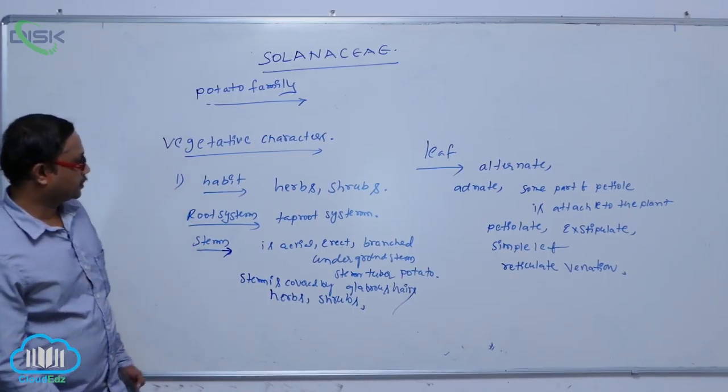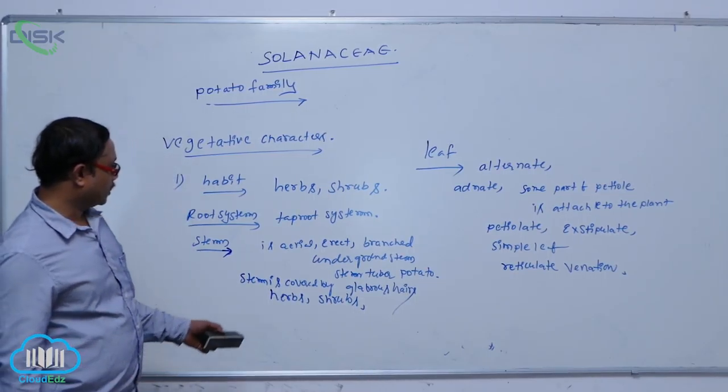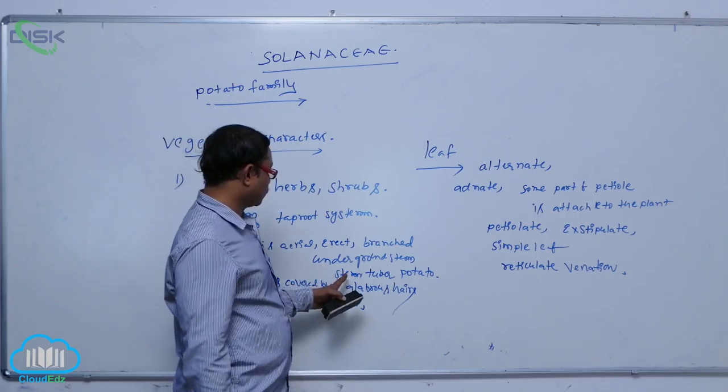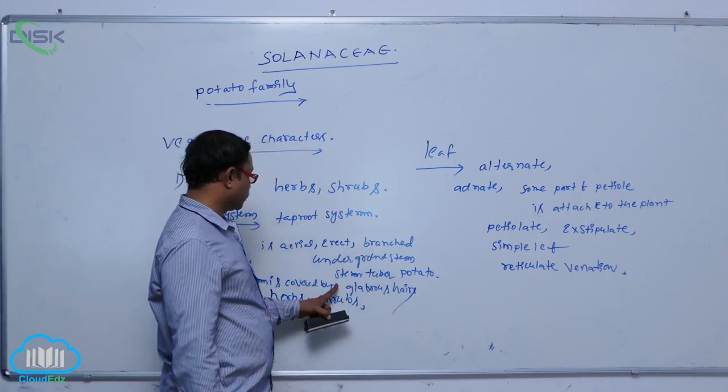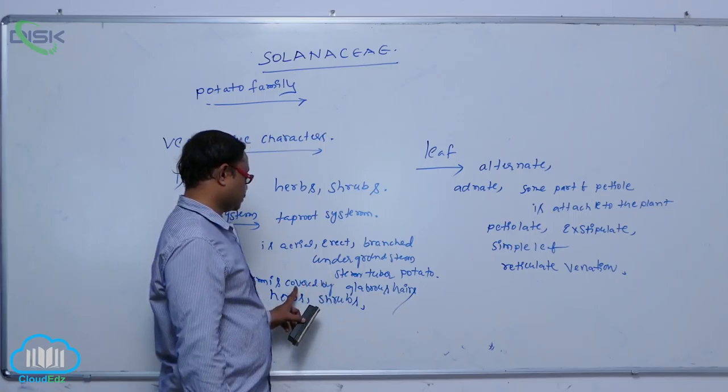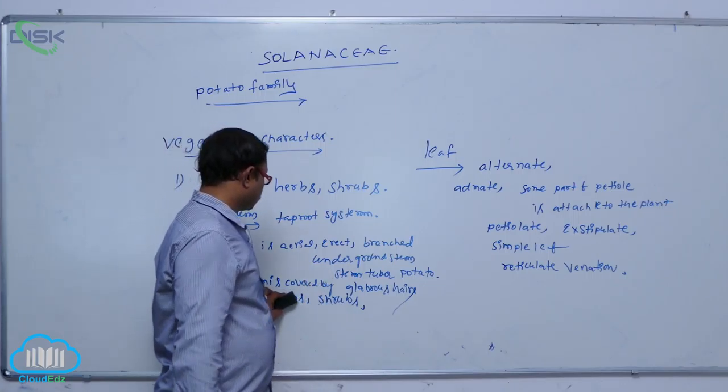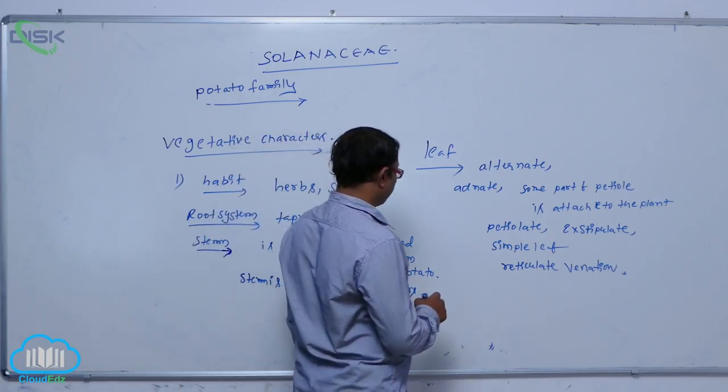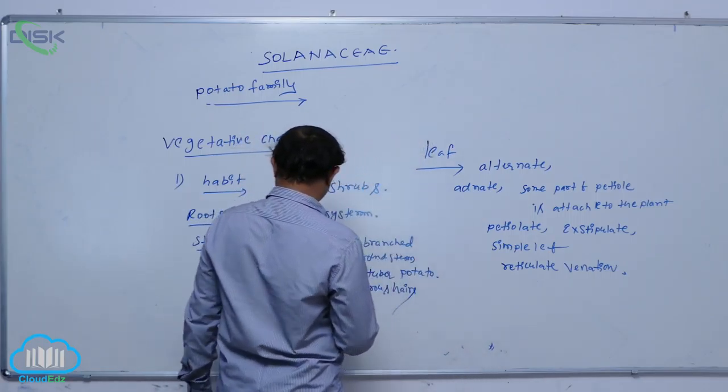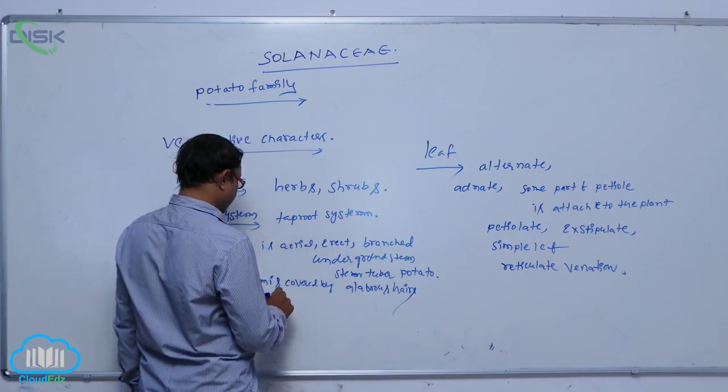Aerial erect branched and underground stem. Underground stem is the stem tuber, potato stem is covered by glabrous hairs. In anatomical characters, the underground stem part generally has bi-collateral vascular bundles.